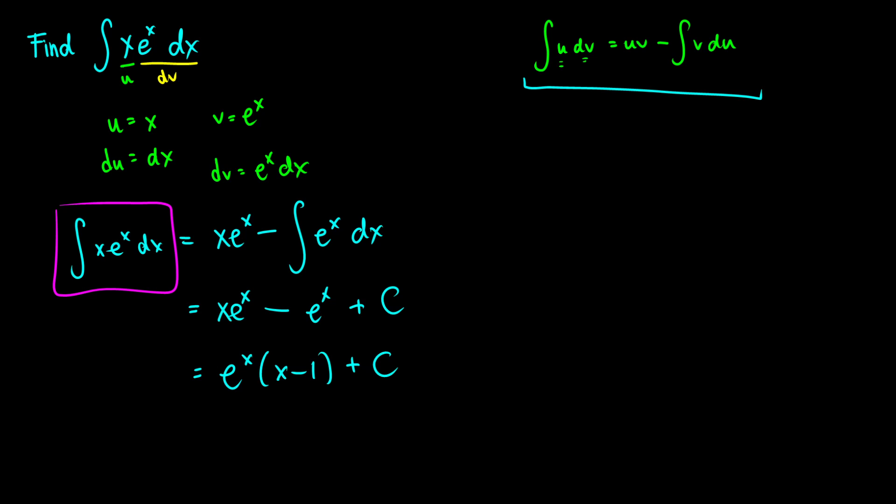An important point and a common mistake: when picking your parts, you pick a u and a dv. Many people mistakenly pick u and v and then differentiate both sides, which doesn't work out nicely. Remember: pick u as something easy to differentiate, and dv as something easy to take the antiderivative of.